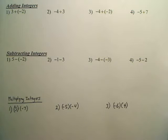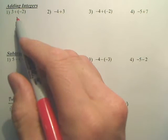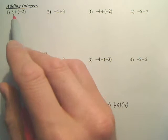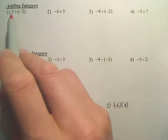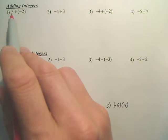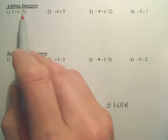When you add integers — integers are positive and negative whole numbers — basically think of this as three bad, three good, two bad.